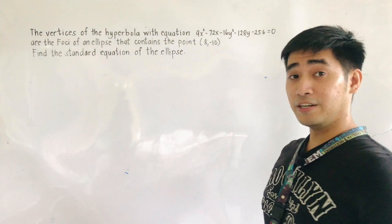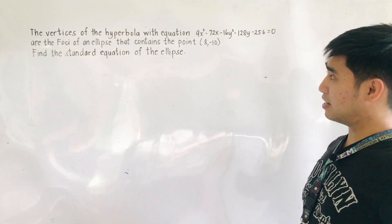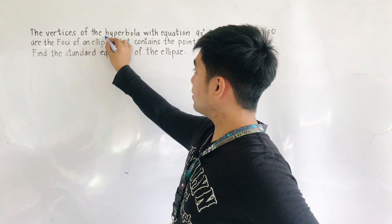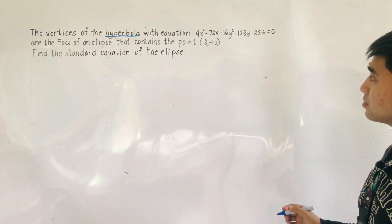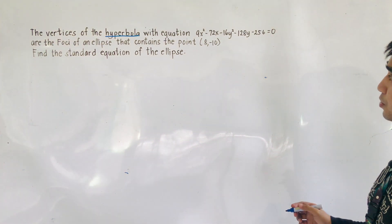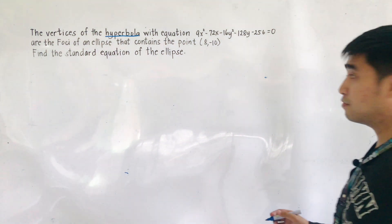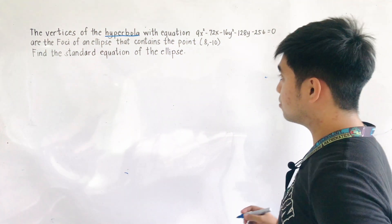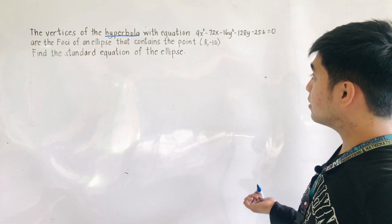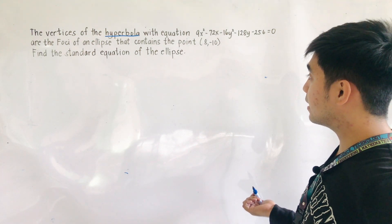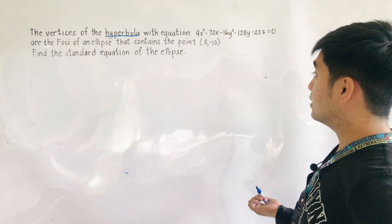We are given another problem. The vertices of the hyperbola — we are given a hyperbola with equation 9x² minus 72x minus 16y² minus 128y minus 256 equals 0 — are the foci of an ellipse that contains the point (8, negative 10). Find the standard equation of the ellipse.